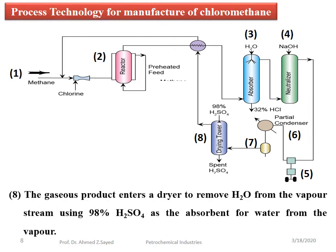Step 8: The gaseous product enters a dryer to remove water from the vapor stream, using 98% sulfuric acid as the absorbent for water from the vapor.